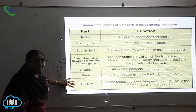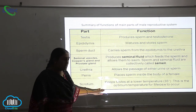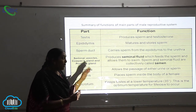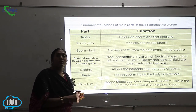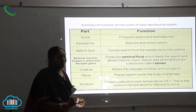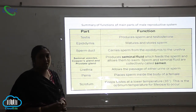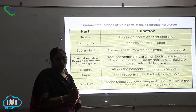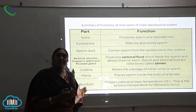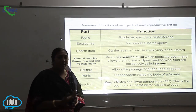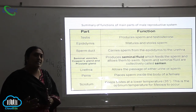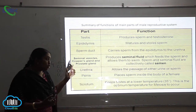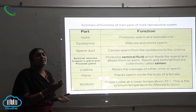The last part, which is certainly not the least, is the scrotum. It keeps the testes at a lower temperature — it maintains 35 degrees centigrade or 93 degrees Fahrenheit. This is the optimum temperature for meiosis to occur, where division of cells takes place and different daughter cells are produced.